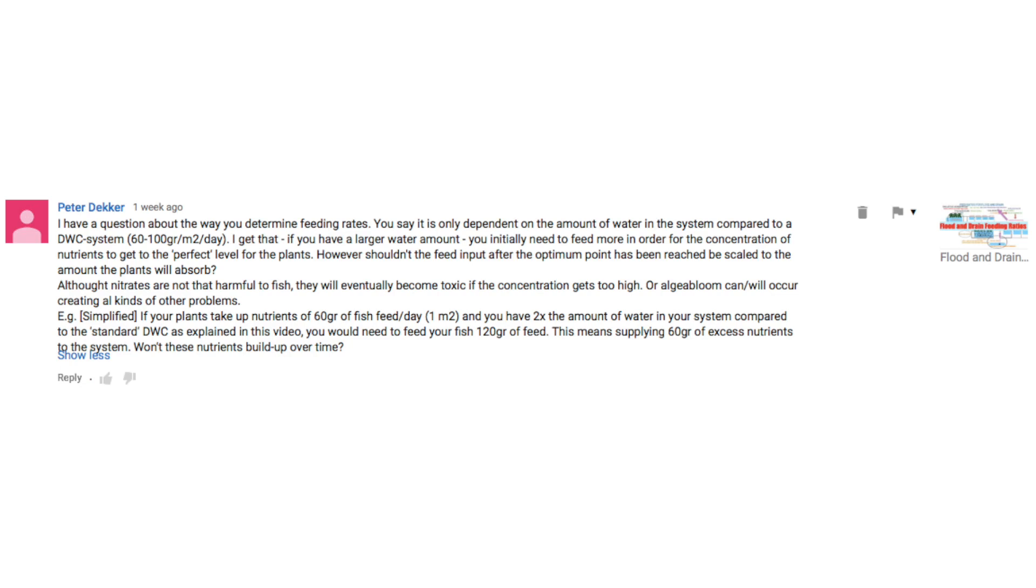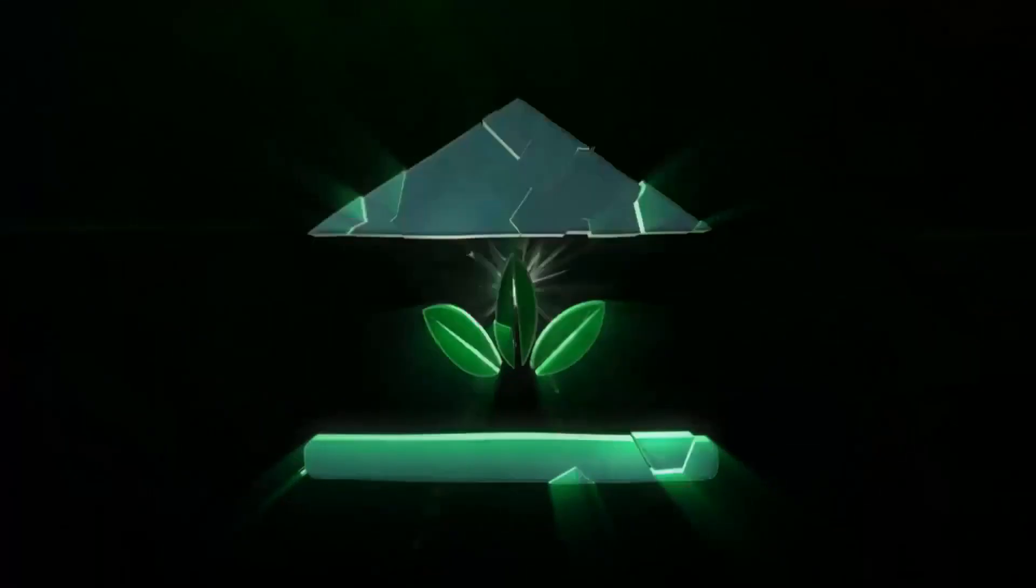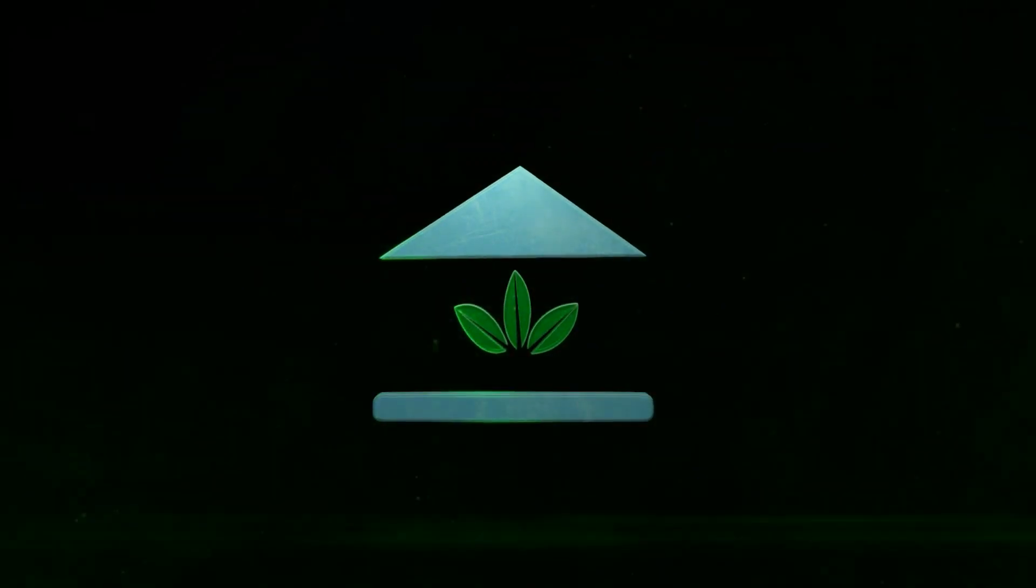However, shouldn't the feed input after the optimum point has been reached be scaled to the amount the plants will absorb? For example, if your plants take up nutrients of 60 grams of fish feed per day per square meter and you have two times the amount of water in your system compared to the standard DWC as explained in this video, you would need to feed your fish 120 grams of feed. This means supplying 60 grams of excessive nutrients to the system. Won't these nutrients build up over time?